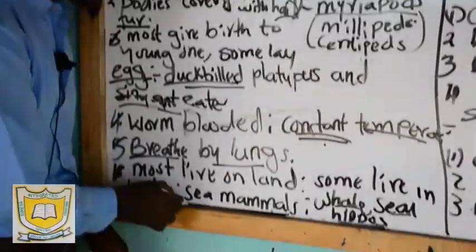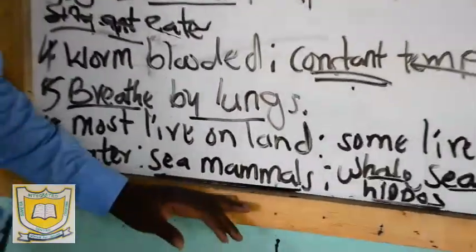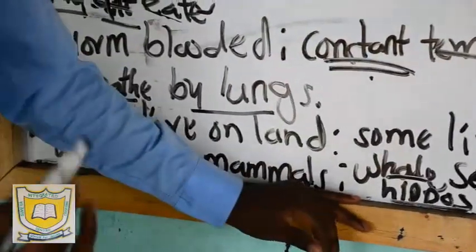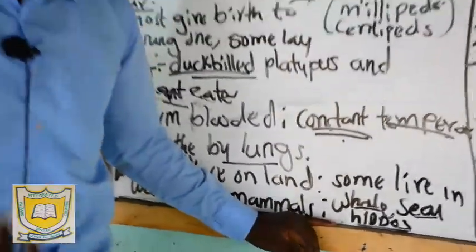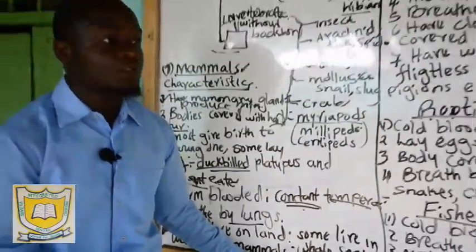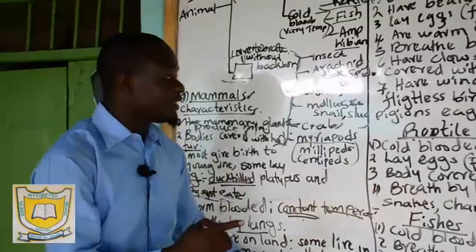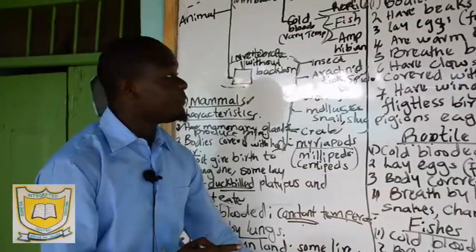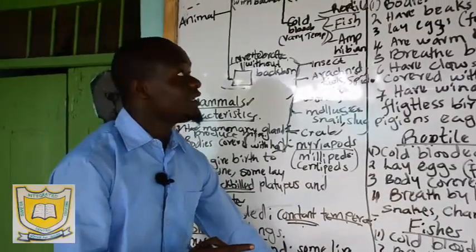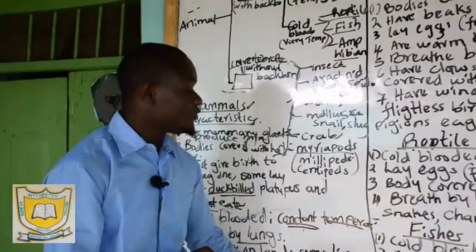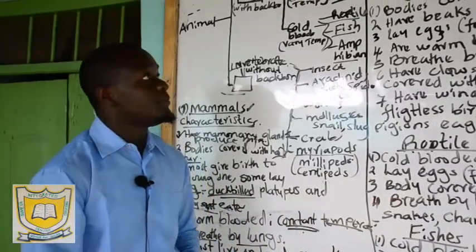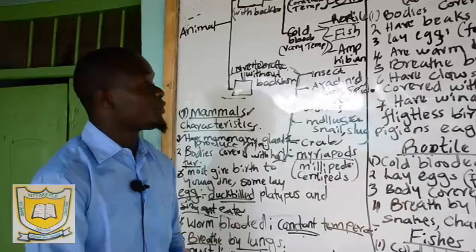If somebody asks you to give examples of sea mammals, say number one is a whale, number two is a seal, and number three is the hippopotamus.